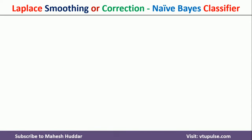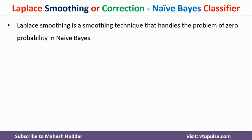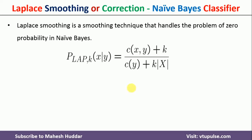To solve this zero probability problem, we use Laplace smoothing or Laplace correction in the Naive Bayes classifier. The equation for Laplace smoothing is: P_LAP,K(X, Y) = (C(X, Y) + K) / (C(Y) + K * |X|), where X is the attribute value, Y is the class, C(X, Y) is the number of times X appears in Y examples, K is the smoothing parameter, C(Y) is the number of Y examples, and |X| is the number of possible values of the feature.